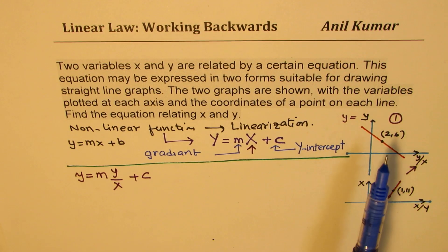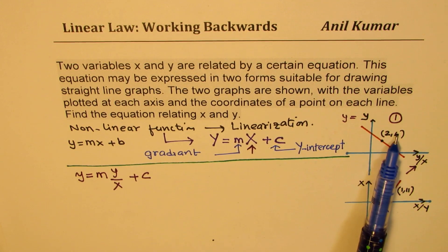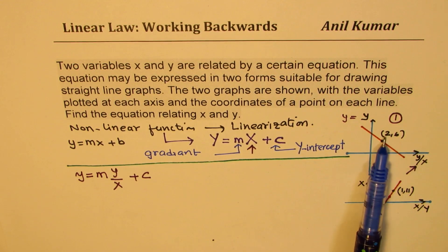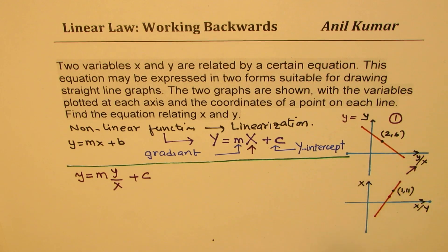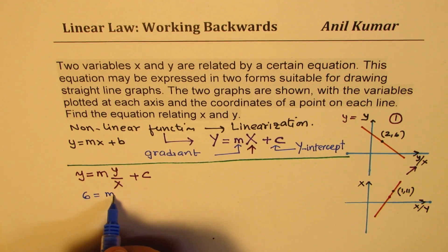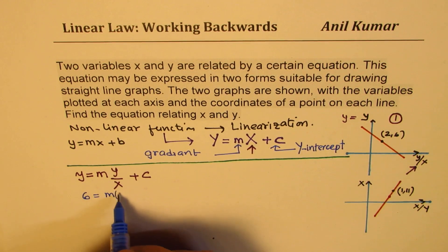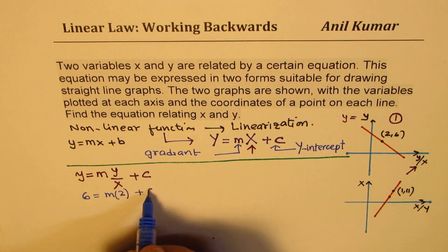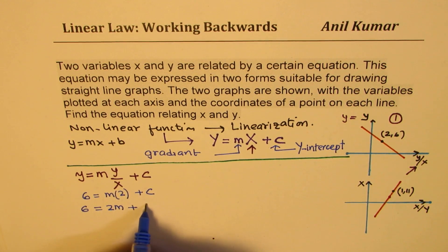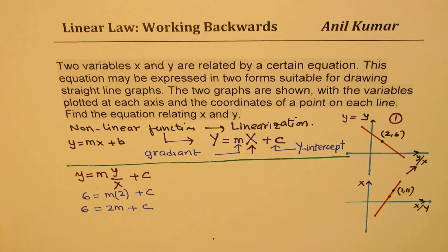Since the point (2, 6) lies on the first graph, the value 2 is the value of Y over X on the X-coordinate, and 6 is the value of the Y-coordinate. So we can write this as 6 = M × 2 + C, giving us our first equation: 6 = 2M + C.